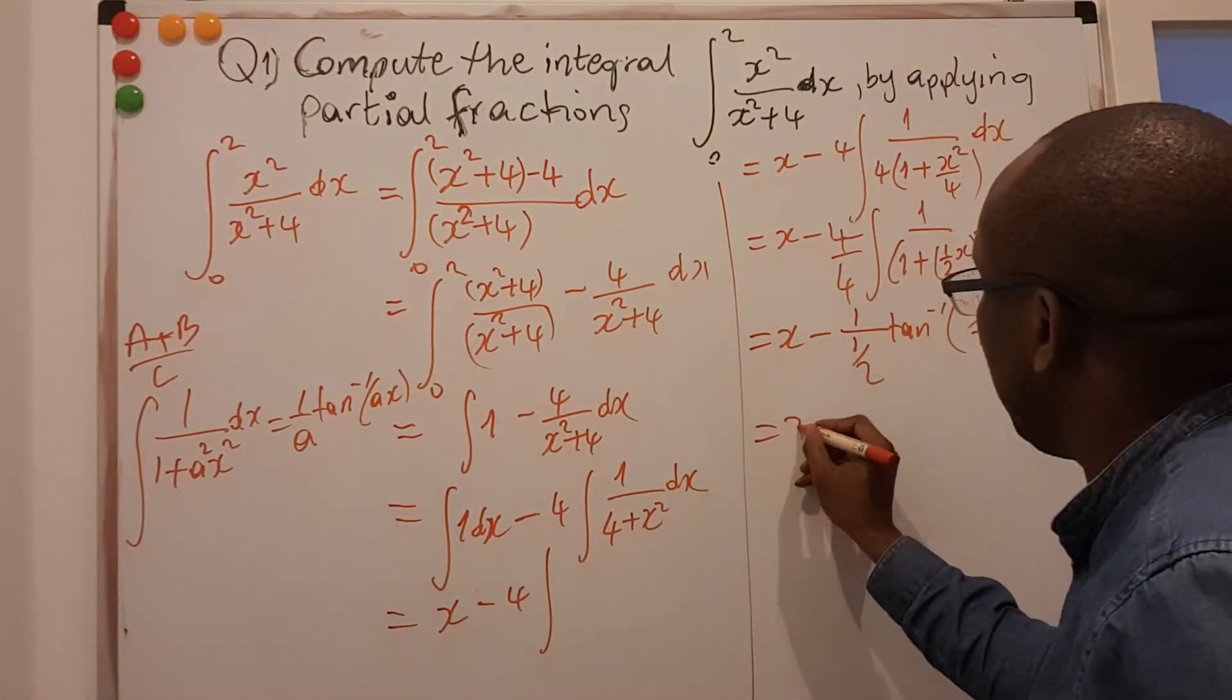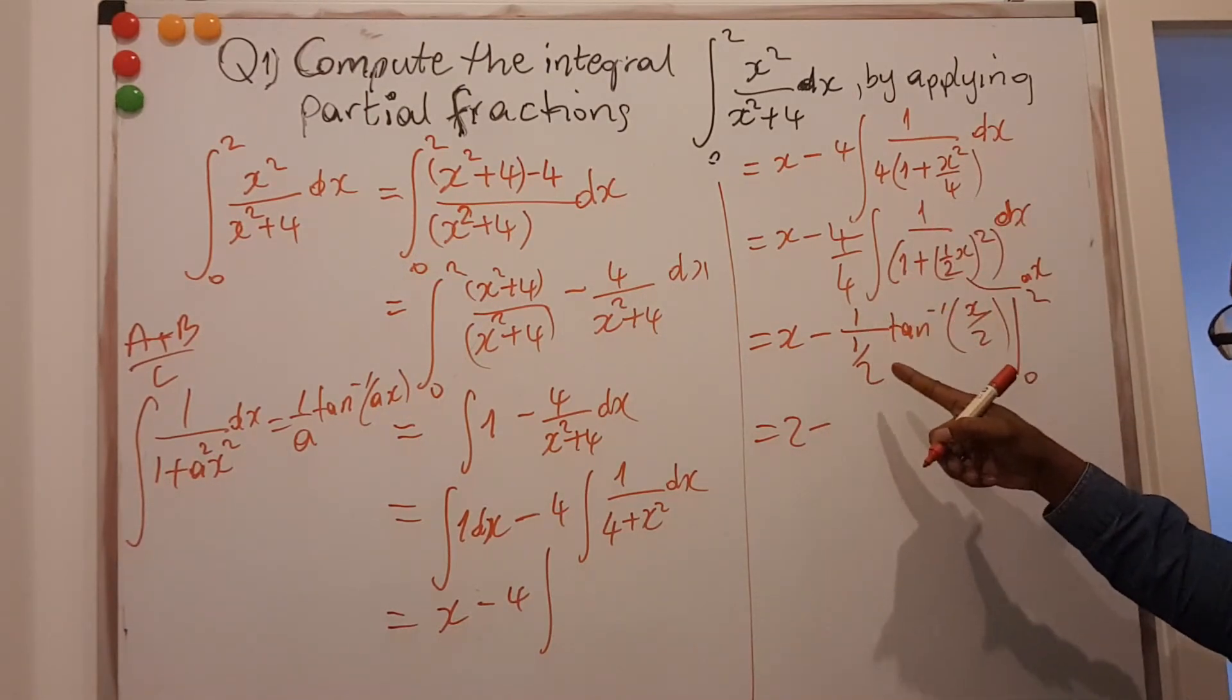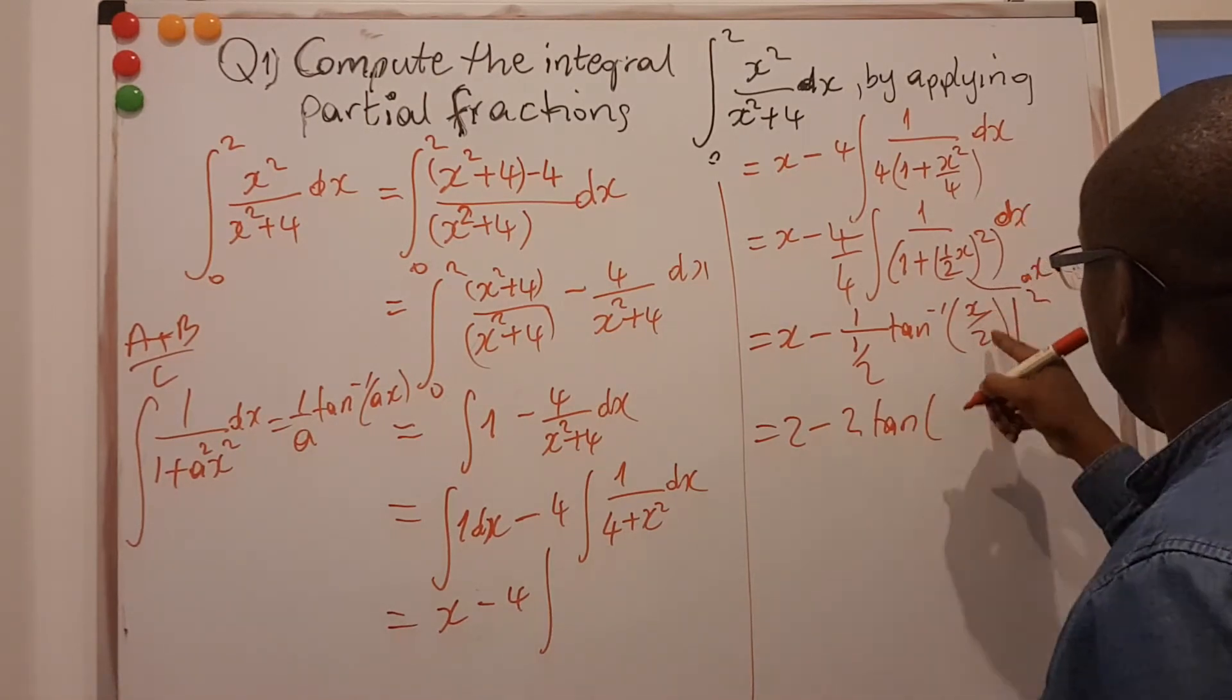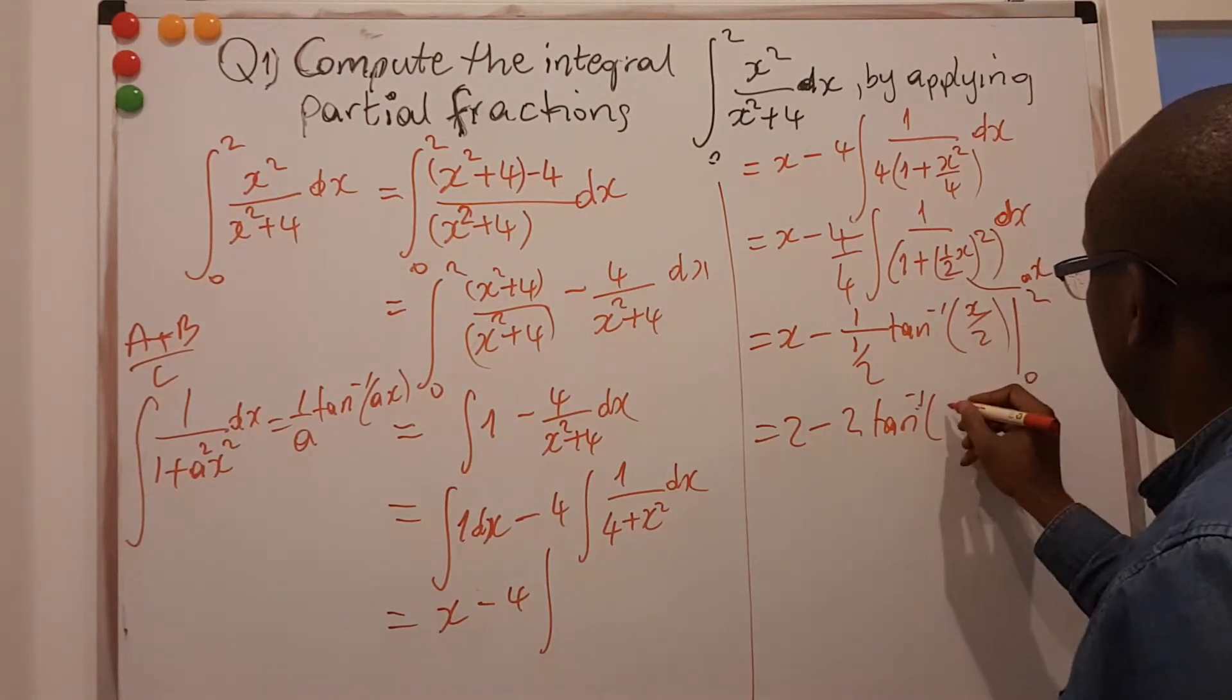And this should be from 0 to 2. If I do that, then I get 2 here minus. This inverts. 1 divided by half is like multiplying by 2. The tangent, tan inverse 2 divided by 2 is 1. Tan inverse of 1.